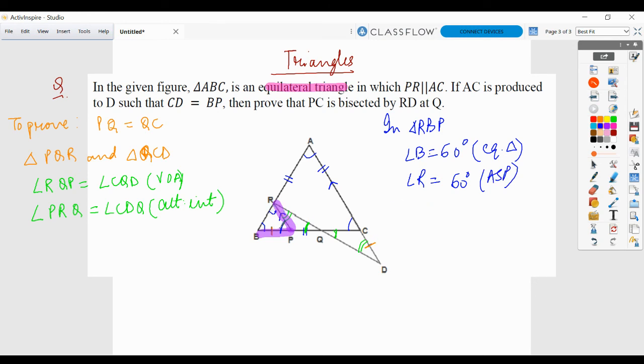So all these three angles become 60. In fact, it is an equilateral triangle now. So all these three sides are equal. So we get that BP equals to RP. BP was also equals to CD which was given to me.